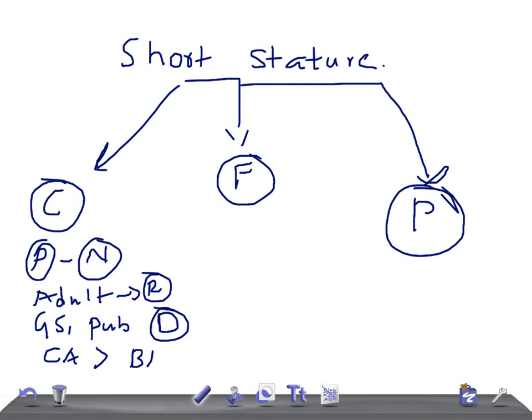If it's familial short stature, the patient is parallel to the growth curve. There's a strong family history of short stature. That's really very important. You should look at the patient's parents' height.